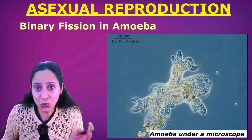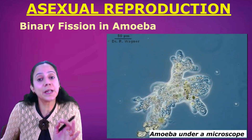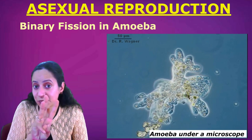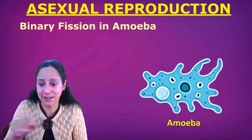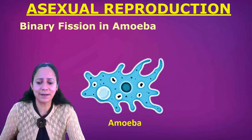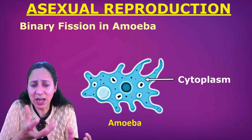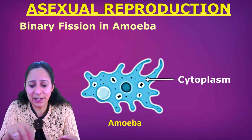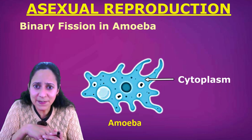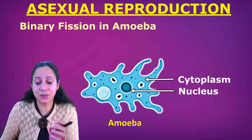When we have to know about binary fission in amoeba, we should have a clear idea about its three parts. These three parts are: cytoplasm, which is a jelly-like material present within this unicellular organism, and nucleus, which is the central solid bigger cell organelle.